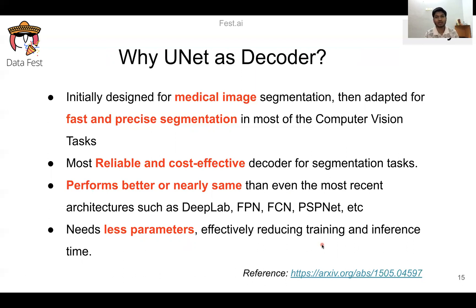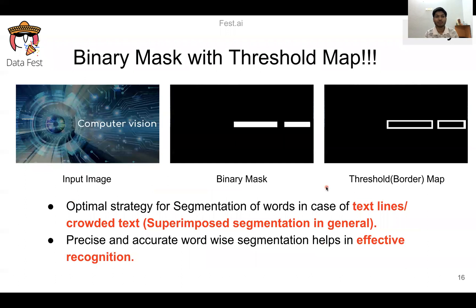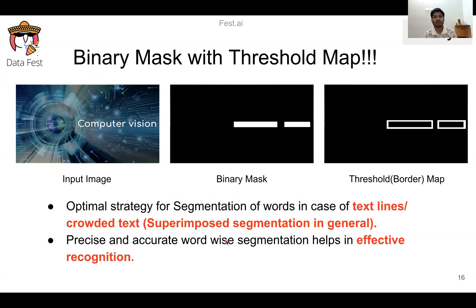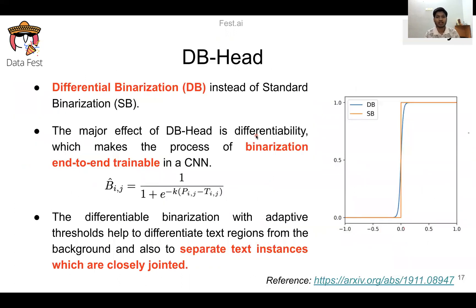We use a dual map strategy. The first map is called the binary map and the second is called the threshold map. The binary map is a segmentation mask, and the threshold map represents the border of the binary map. This optimal strategy gives us the best results for text lines and crowded text with superimposed segmentation. It also gives us precise and accurate word-wise segmentation, which positively affects our recognition performance.